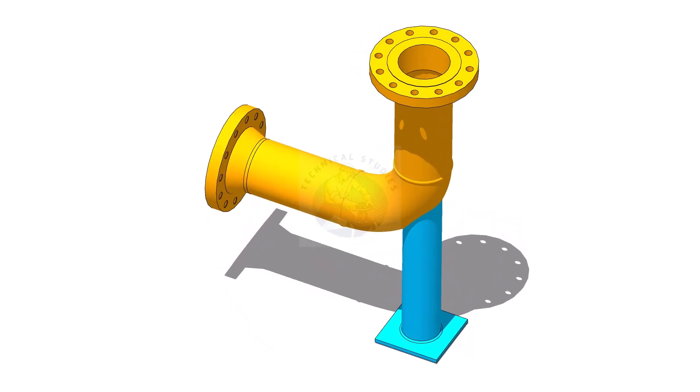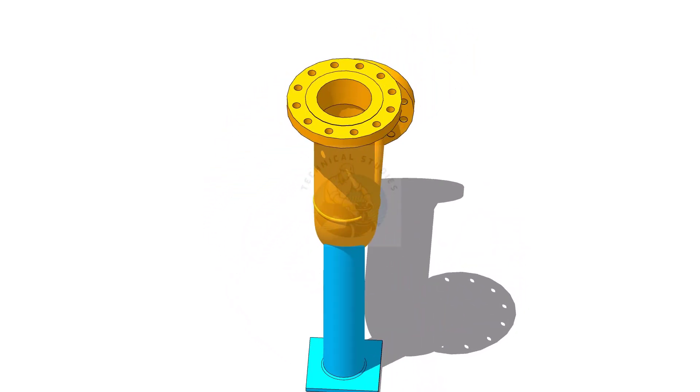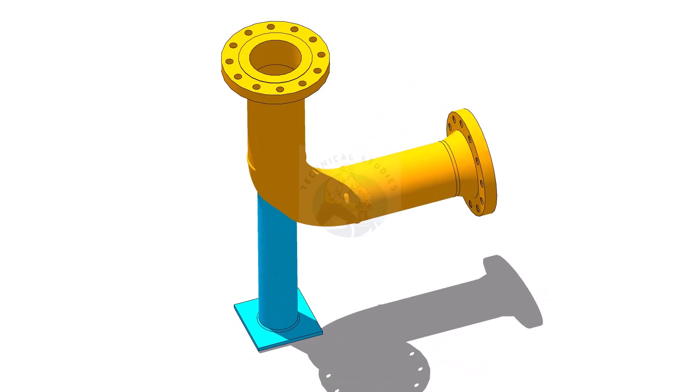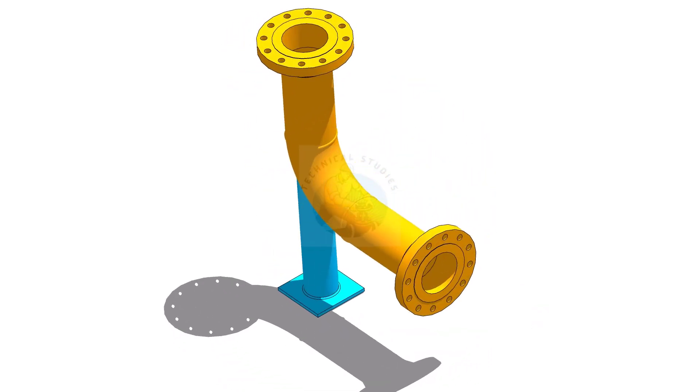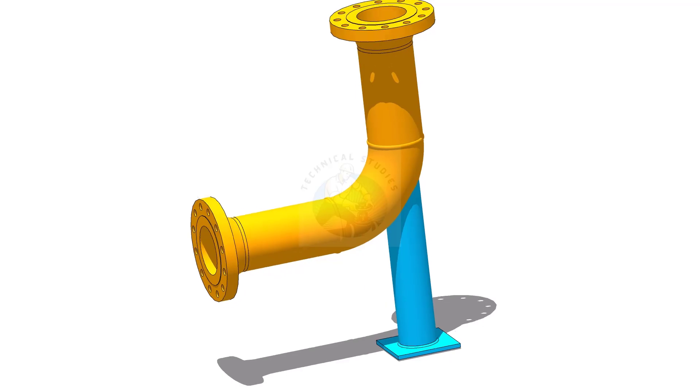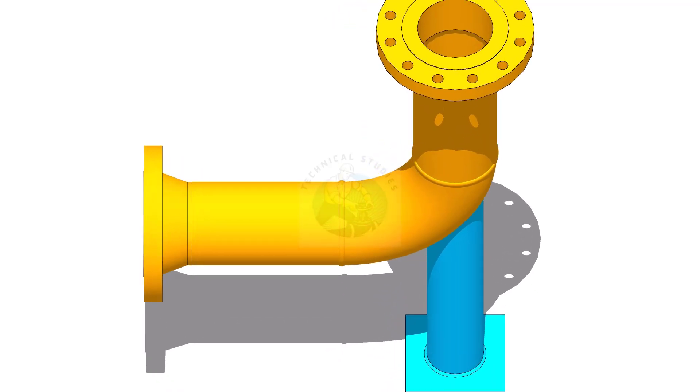A trunnion pipe support is a type of pipe support used to reinforce and stabilize piping systems. In this video, I will show you how to lay out a trunnion support. Please subscribe, like and comment.